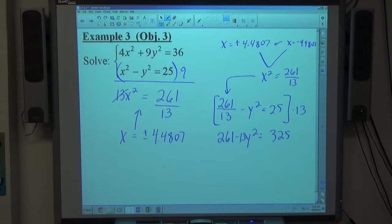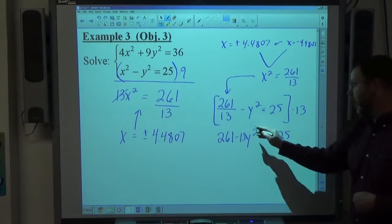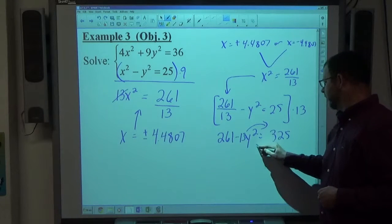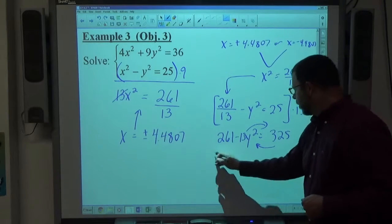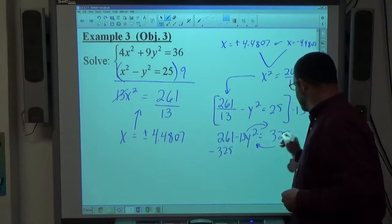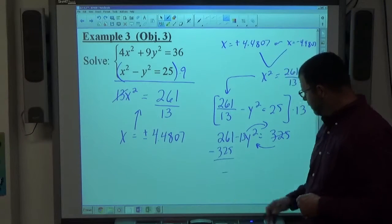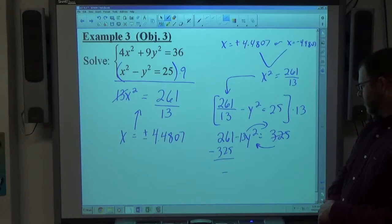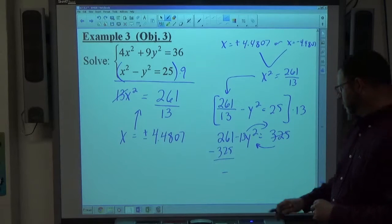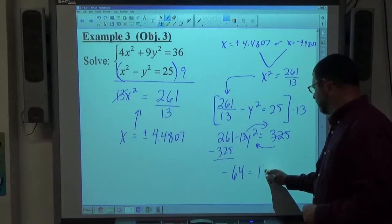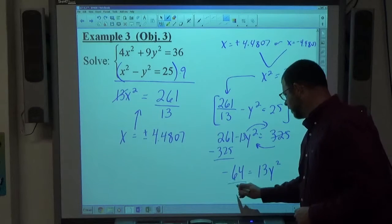Multiplying by 13. I'm going to move the 13y squared over to the right. I like my y squared positive. I'm going to move 325 to the left. 261 minus 325 makes negative 64 equals 13y squared divided by 13.